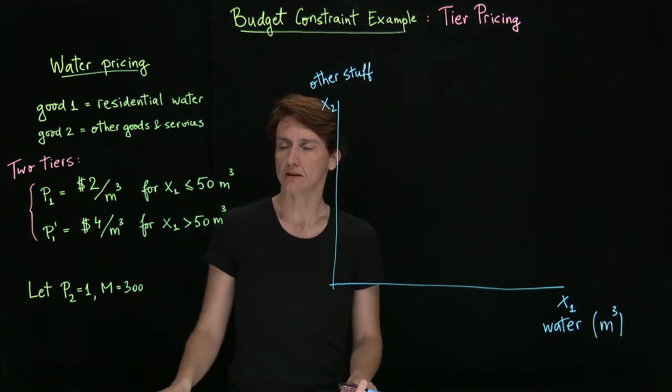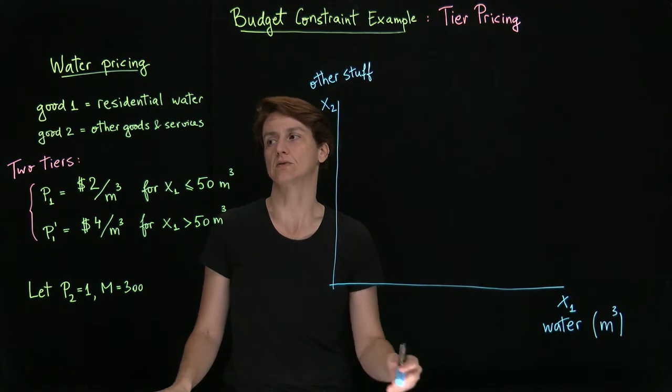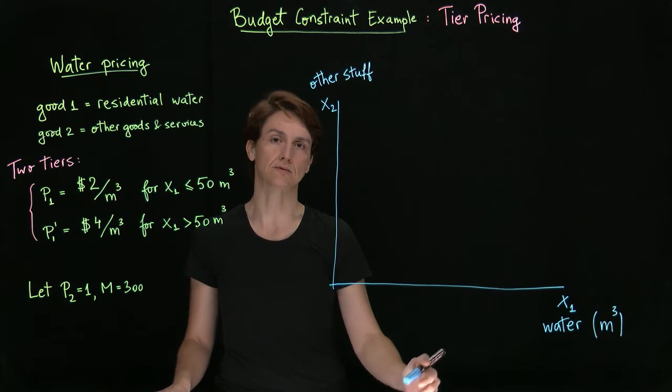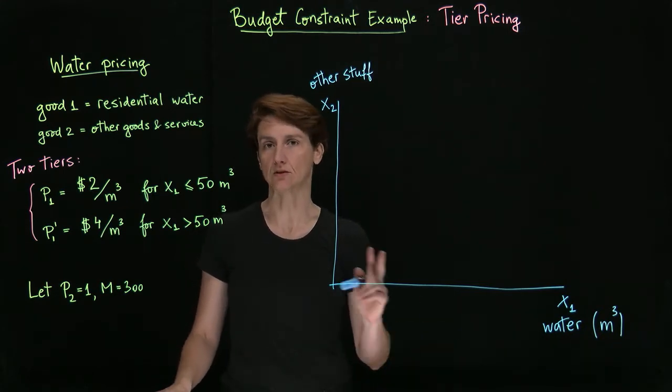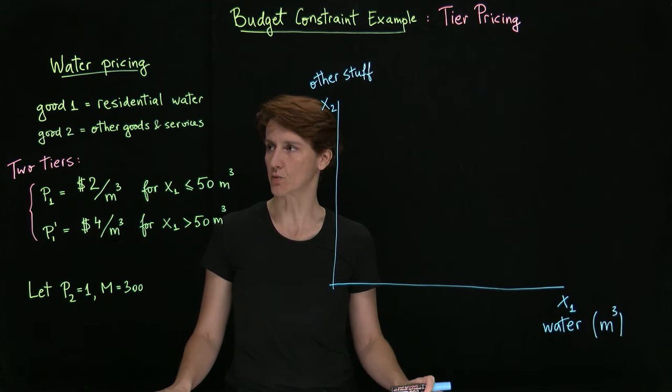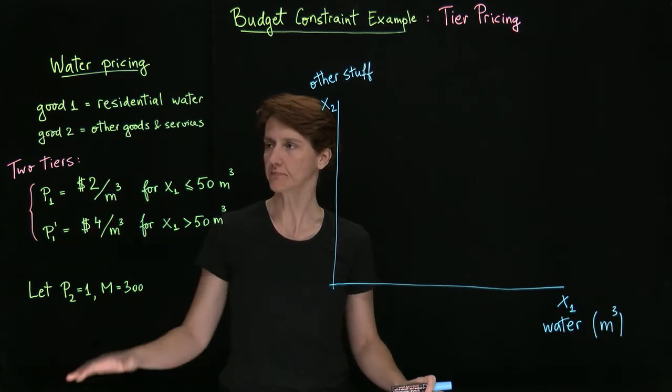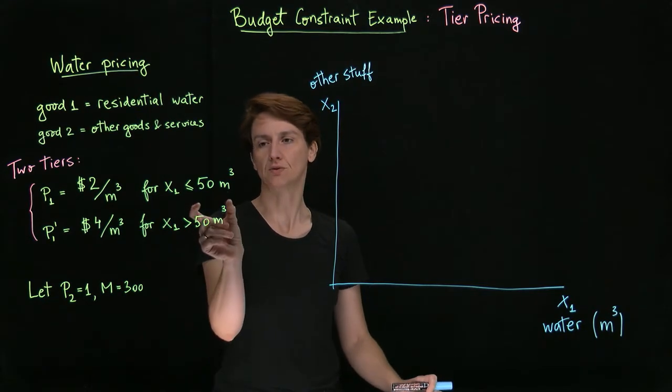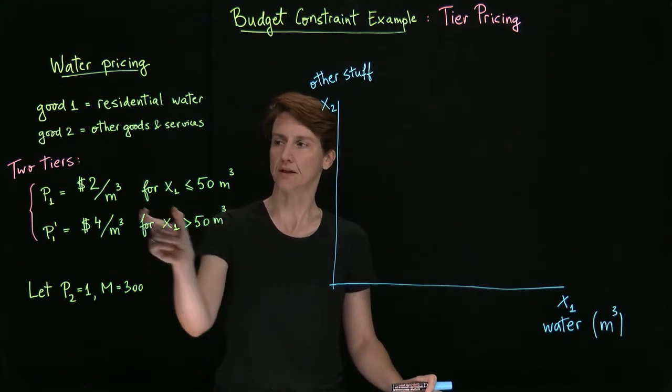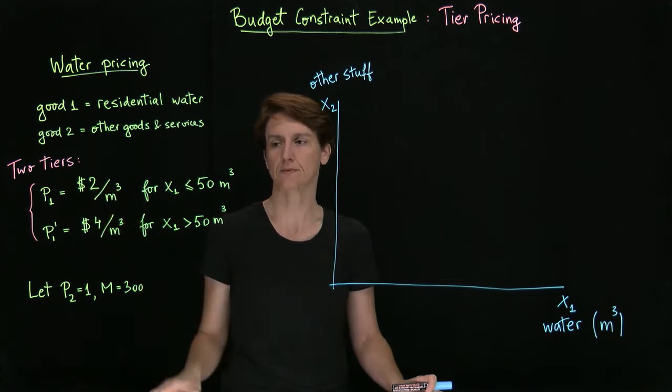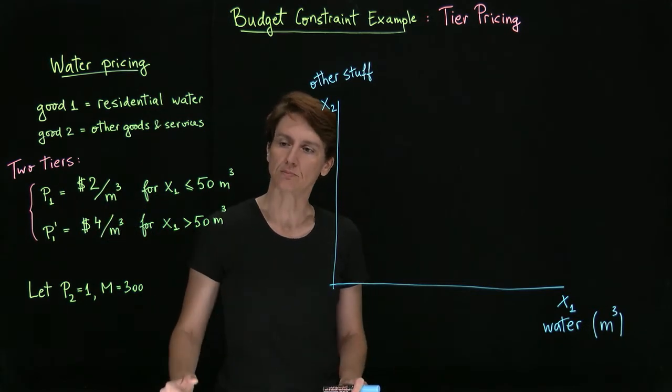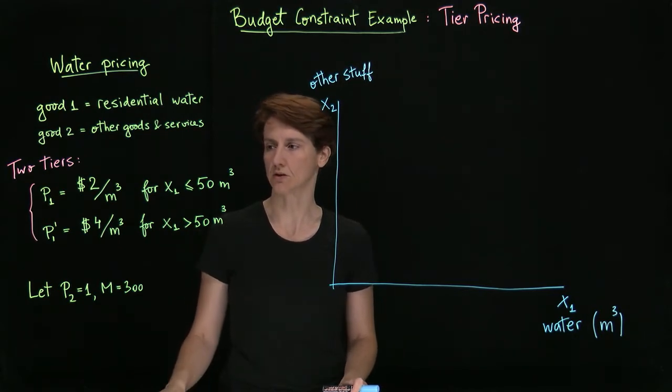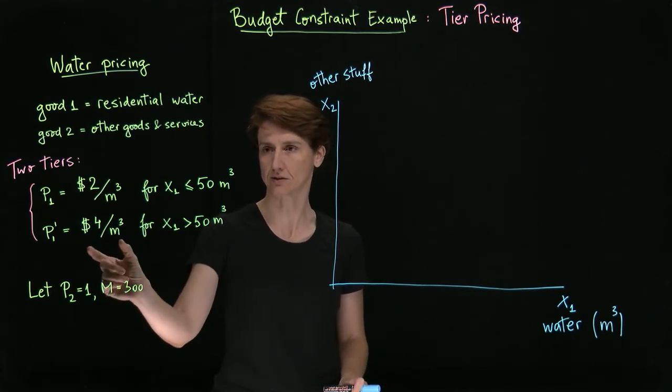Water, as many utilities, is now typically priced in tiers, meaning that the price you pay per unit depends on the level of consumption. For example, suppose that there are two tiers in the pricing for water in a given city, so that if a household consumes up to 50 cubic meters, the price they pay for each is two dollars. If they consume above that, then any consumption above 50 will be priced at four dollars per cubic meter.